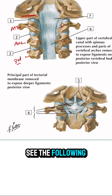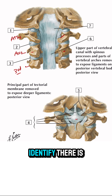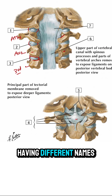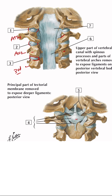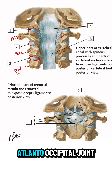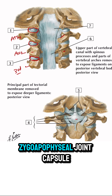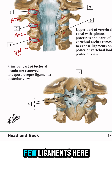Once again, the spinous processes have been removed to be able to see the following ligaments. As you can identify, there are some capsules in between all these joints — they are very similar but they have different names. This is the capsule between the atlanto-occipital joint, this is the capsule between the atlanto-axial joint, and this is the zygapophysial joint capsule.